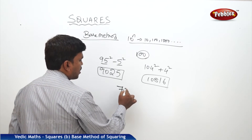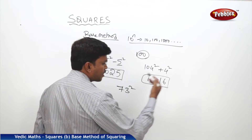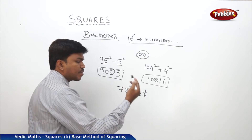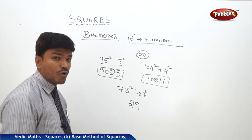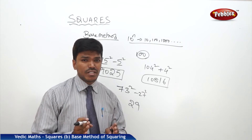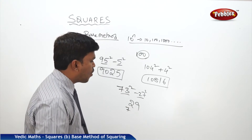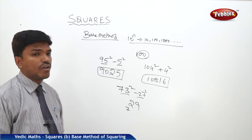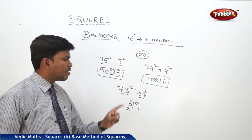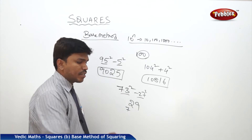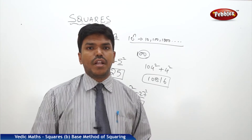One more example: 73 squared. Compare 73 with base 100 — it is less by 27. What is 27 squared? 729. The right side part should consist of only 2 digits, so write 29 and 7 becomes the carry. Now 73 minus 27 is 46. Add carry 7: 46 plus 7 is 53. So the answer is 5329.